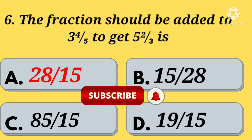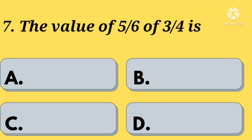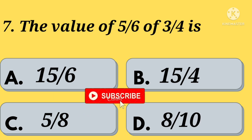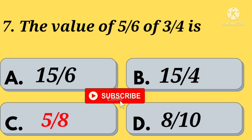Right. Now, seventh question. Option A: 15 by 6. Option B: 15 by 4. Option C: 5 by 8. Option D: 8 by 10. Your time starts now. Right. Option C: 5 by 8.